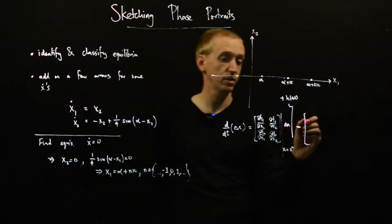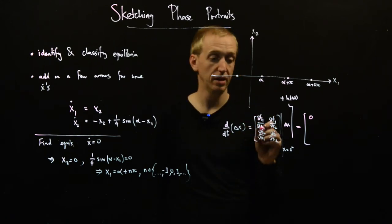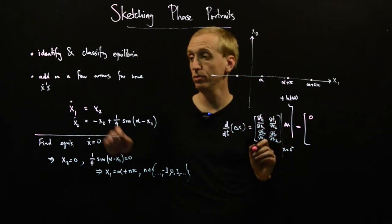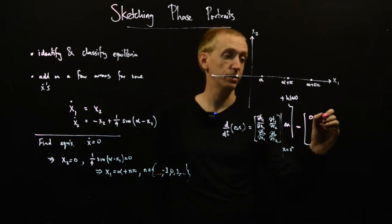Nothing here depends on x1, so df1 by dx1 is equal to zero. df1 by dx2, well, f1 of x is just equal to x2, so this is equal to one.